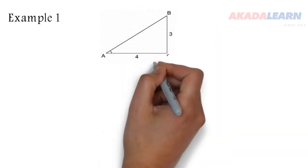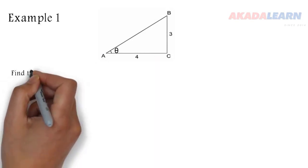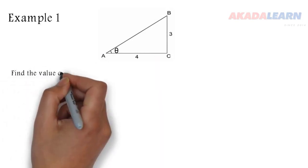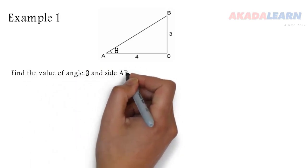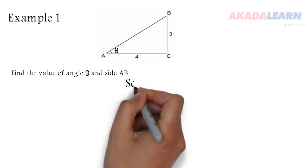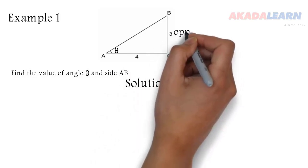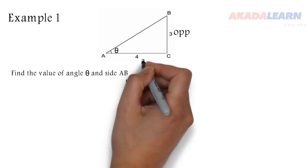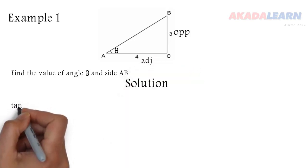Right here we have a right angle triangle with theta at A. We are asked to find the value of the angle theta and the side AB. So looking at the figure closely, we discover that side BC, which is 3, is the opposite, and the side with 4 is the adjacent.